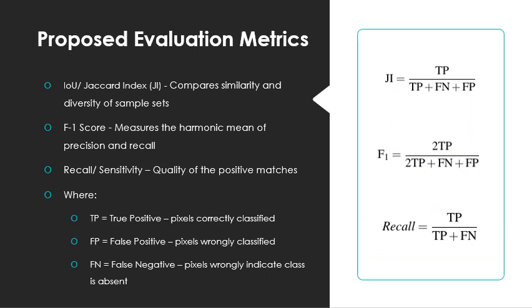In our case, we chose these three here in the slides. Those being Jaccard Index or IOU, F1 score, and recall. Those were chosen because IOU compares the true positives in all the possible results, similarity and diversity of sample sets. F1 is a weighted version of IOU, and it measures the harmonic mean of precision and recall. And recall, which measures the quality of the positive matches, which is ideal for a scenario of minimizing false positives. The meaning of the formulas are TP true positive or pixels correctly classified, FP false positive pixels wrongly classified, and FN false negative pixels wrongly indicated class is absent.